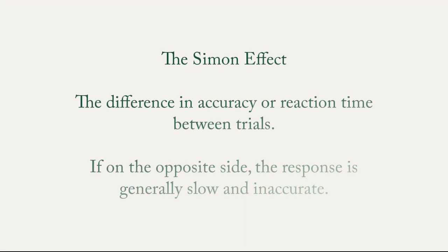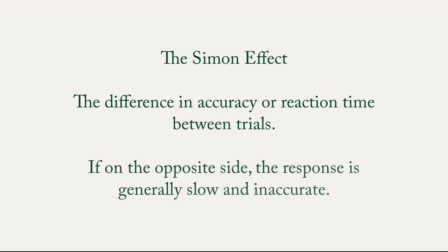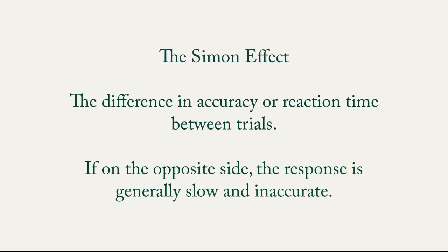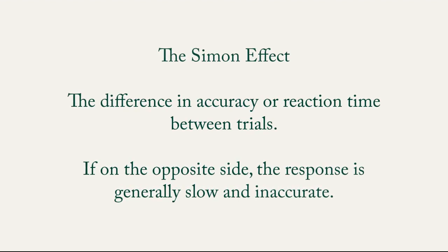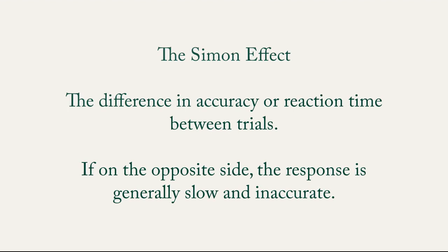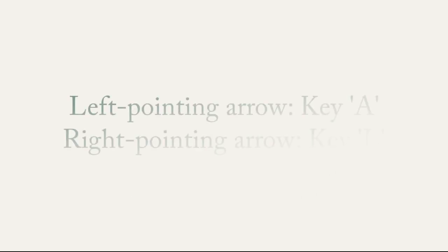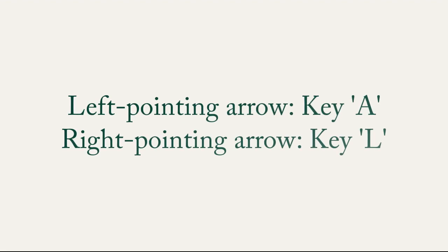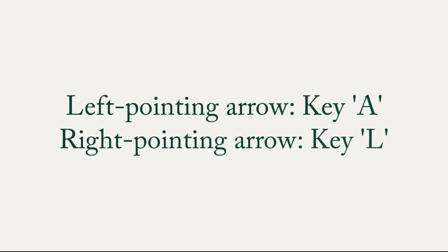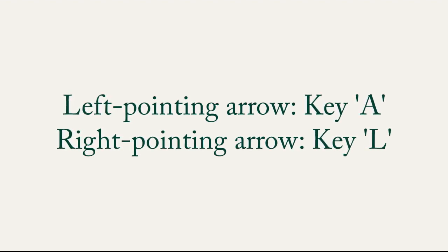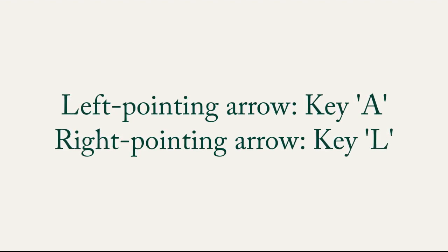The Simon effect is the difference in accuracy or reaction time between trials in which stimulus and response are on the same side, and trials in which they are on the opposite side, with responses being generally slower and less accurate when the stimulus and response are on the opposite sides. Participants are required to press the key A on the keyboard when they see a left-pointing arrow and key L when they see a right-pointing arrow. Stimuli will be placed either on the left or right side, also known as congruent or incongruent.